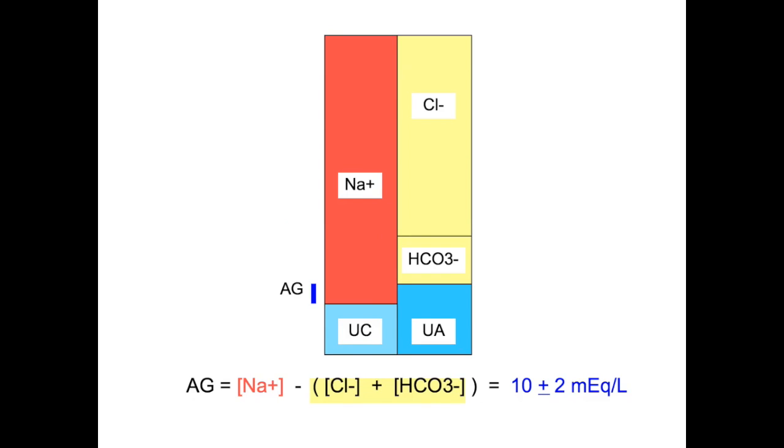Ordinarily, the unmeasured anions in the serum exceed unmeasured cations by a concentration of about 10 milliequivalents per liter, the so-called anion gap.